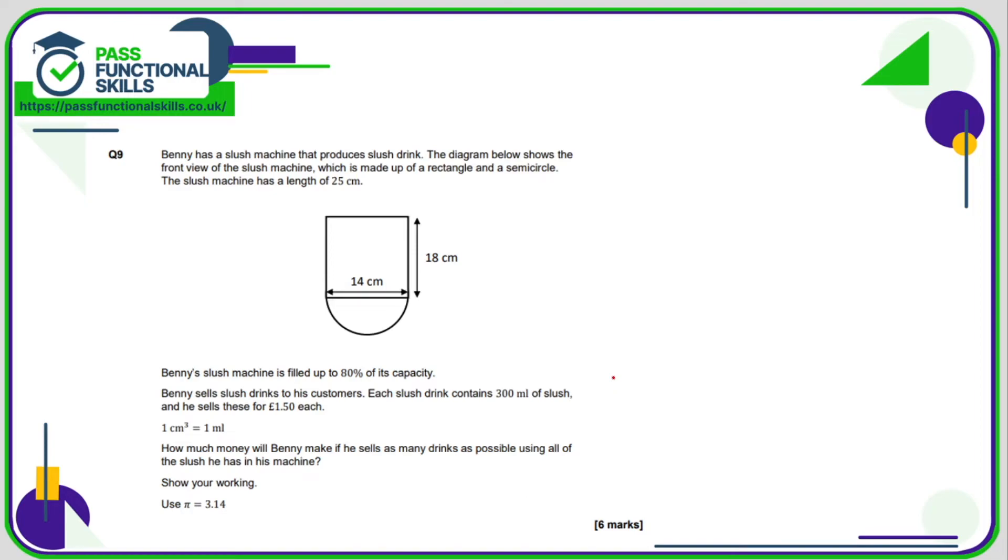Question number nine: this is quite a tricky one. So the first thing we need to do is work out the volume of this slush drink container. I guess we just got to imagine that it's got this sort of third dimension here. Now to work out the volume, we need to work out the area of the front face and then multiply it by its depth, or here it's described as the length, which is 25.